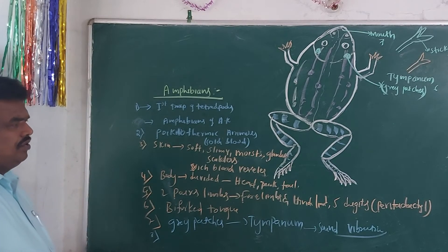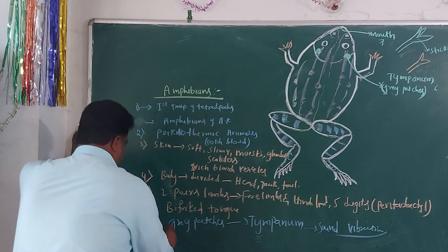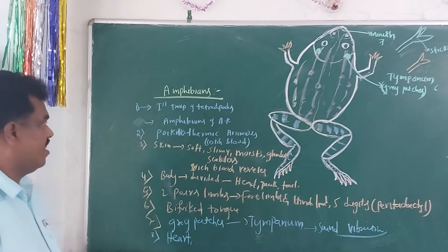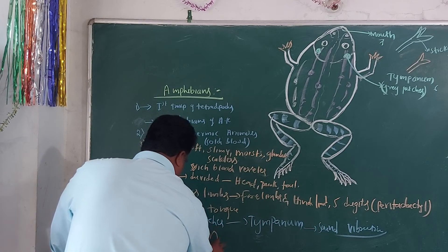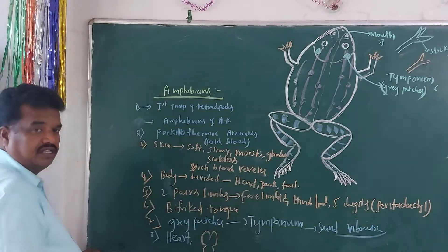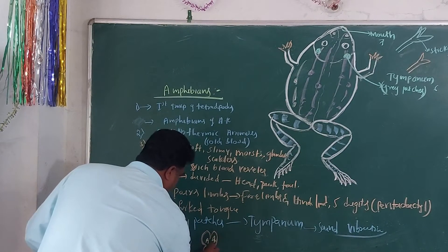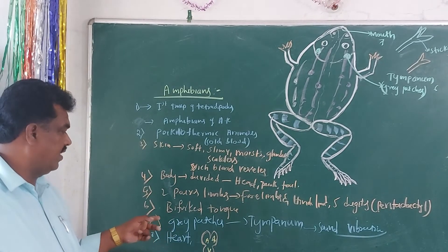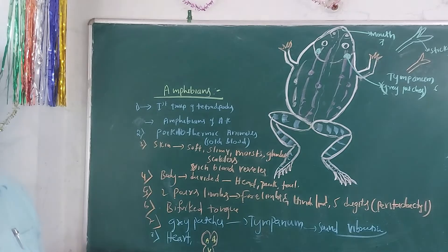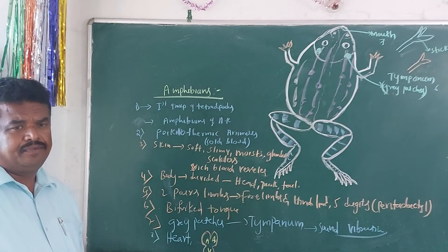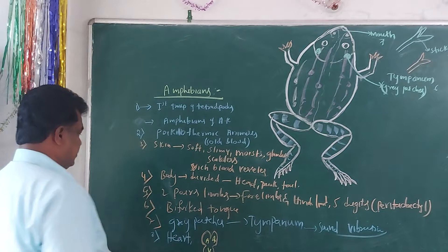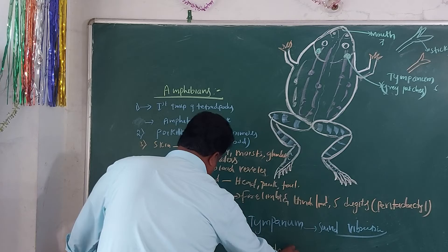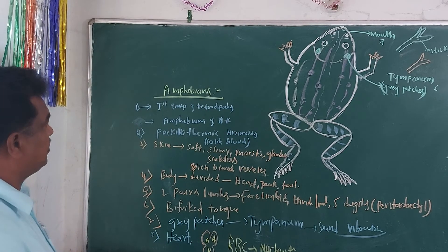If you take the circulatory system: in amphibians, the heart is a three-chambered heart. It mainly consists of two auricles and one ventricle. The blood is red in color and the RBC cells are nucleated.